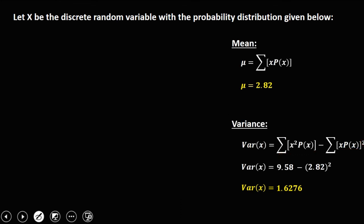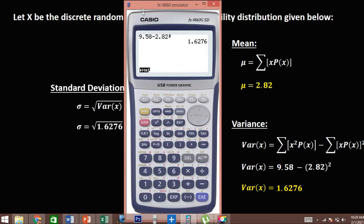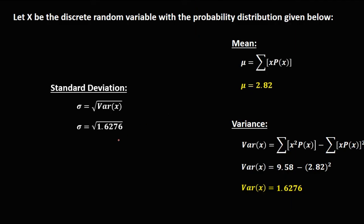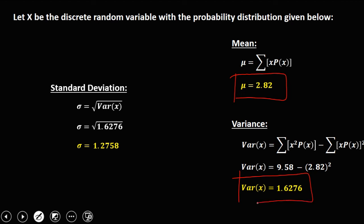For the standard deviation, we take the square root of the variance — the square root of 1.6276. Therefore, the standard deviation is 1.2758. So this is the mean, the variance, and the standard deviation of the given probability distribution.